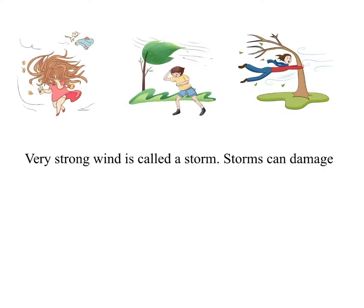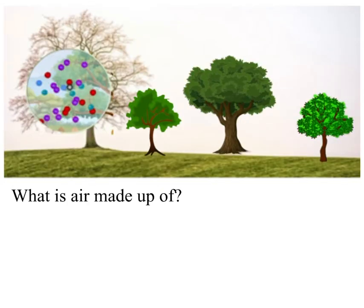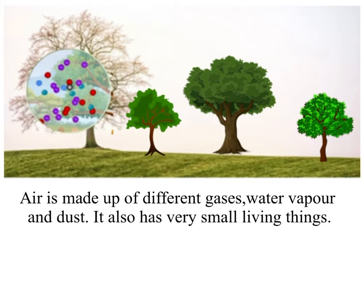Very strong wind is called a storm. Storms can damage buildings, uproot trees, and harm animals and people. What is air made up of? Air is made up of different gases, water vapor, and dust.